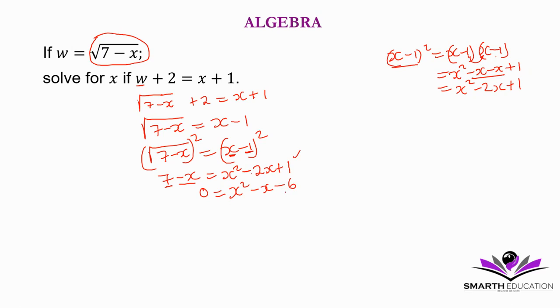We look for factors of negative 6 that give us negative 1. 6 factors to 3 and 2. Negative 6 means one is negative and the other positive. The negative x shows us the bigger one is negative: negative 3 and positive 2. So 0 equals x minus 3 times x plus 2. Let's check: negative 3 times 2 is negative 6, and negative 3 plus 2 is negative 1. This is correct.